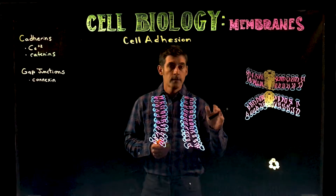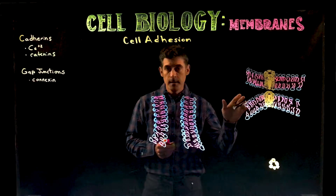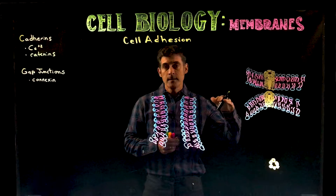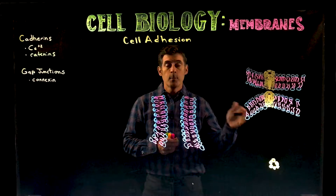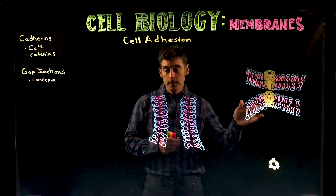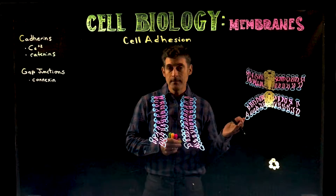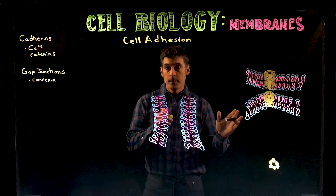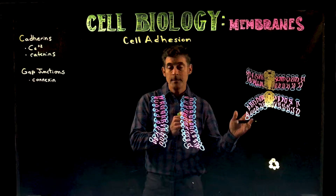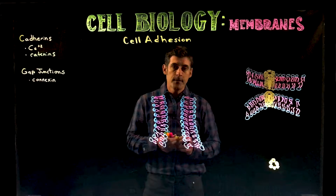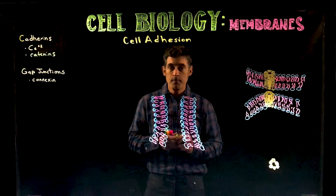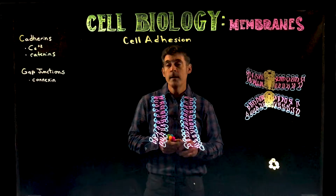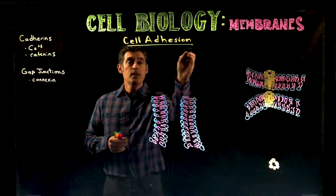We've looked at membrane structure and its ability to act as a barrier, preventing diffusion of certain molecules, allowing diffusion of others, and actively transporting molecules across the membrane. But there are some other topics related to that — different jobs that membranes have that don't necessarily involve transport directly — and one of those has to do with cell adhesion.